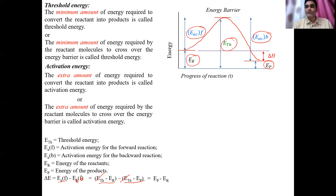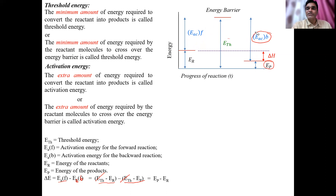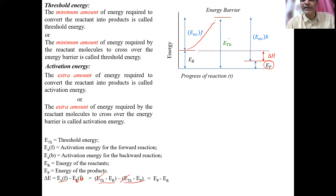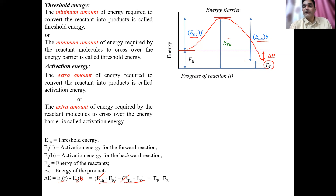To summarize: delta H = E_A(forward) − E_A(backward). When reactants convert to products through the energy barrier, the forward activation energy minus the backward activation energy gives delta H. This is the exothermic reaction diagram because here the energy of the reactant is more and the energy of the product is less — something amount of energy is released.